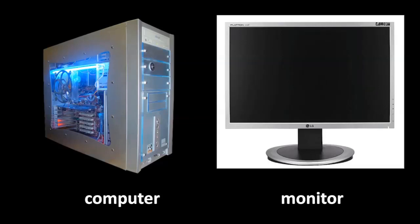It's very common that people fail to distinguish between what's called a monitor and an actual computer. A monitor is simply a display device — something which displays an image sent to it through a signal from the computer. Otherwise, a monitor is a dumb device. It's entirely up to the computer to determine what image to display. So try not to call your monitor a computer.